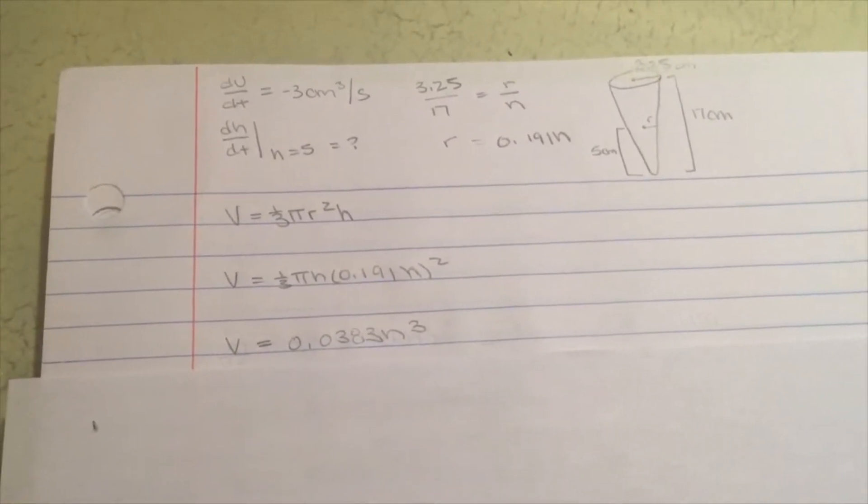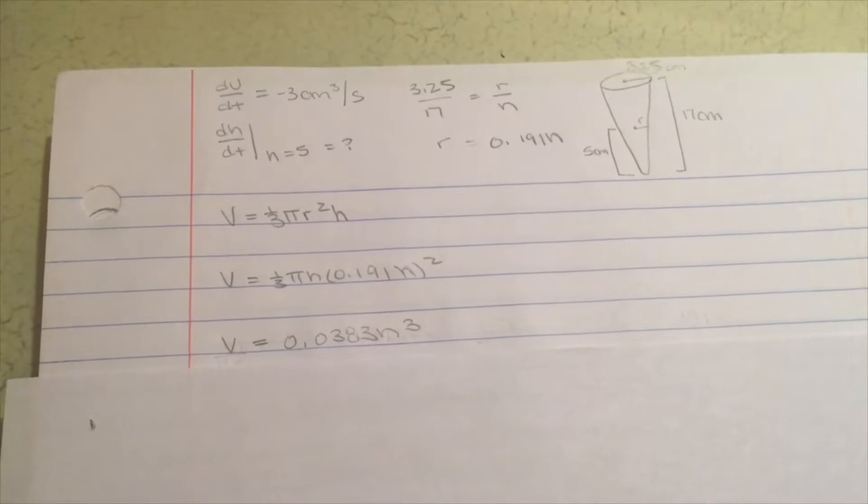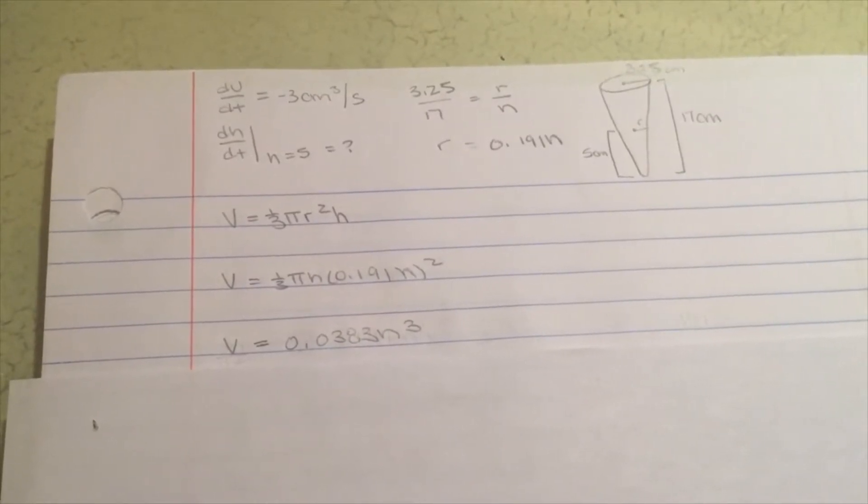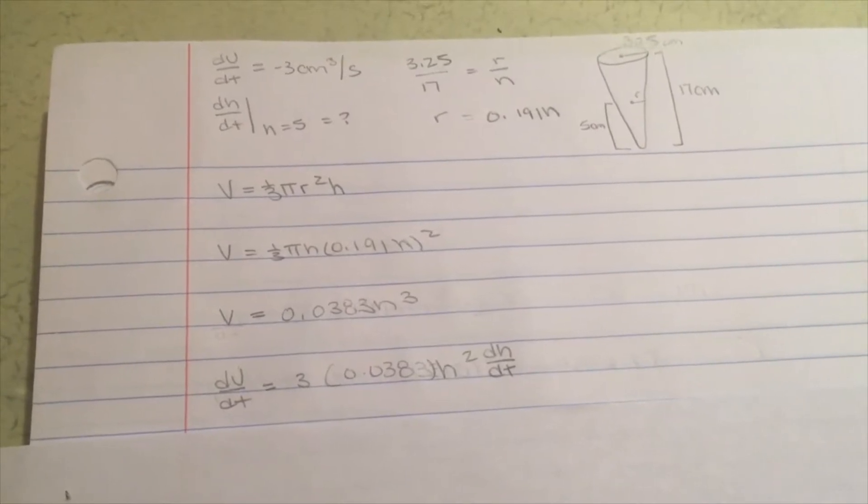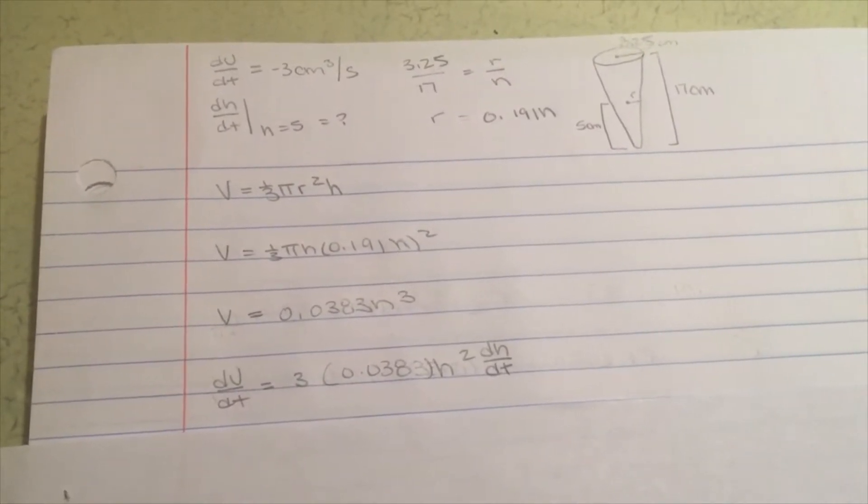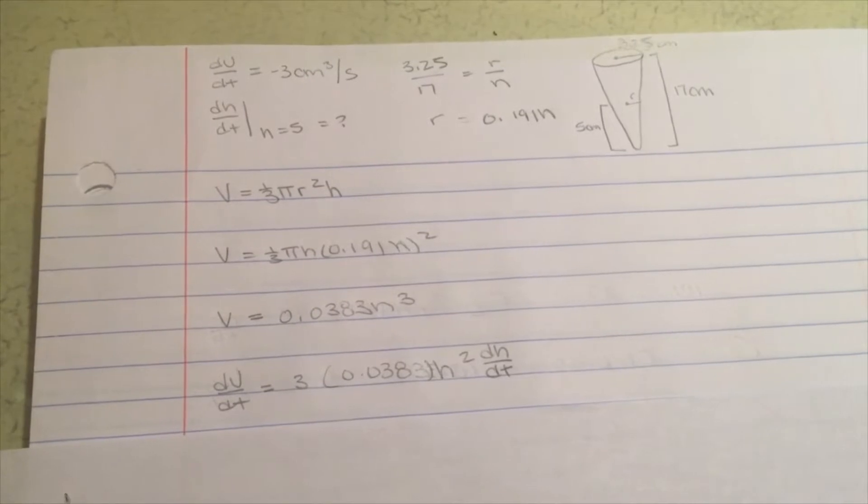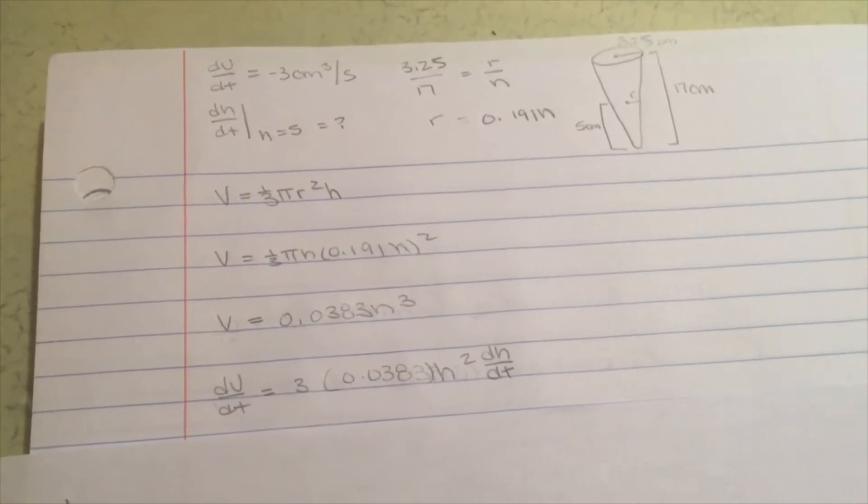Now that everything is in terms of the height, we can take the derivative to find the rate the height is changing using the power rule to get the change in volume over time equals 3 times 0.0383 times the height squared times the change in height over time. We can then plug in the rate of the volume of sugar, which is negative 3.